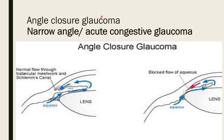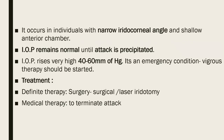In closed-angle glaucoma — also called narrow-angle glaucoma or acute congestive glaucoma — the iridocorneal angle is very narrow and the anterior chamber is shallow. Intraocular pressure remains normal until an attack is precipitated.